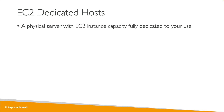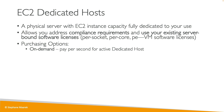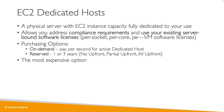Next, we have dedicated hosts. You get an actual physical server with EC2 instance capacity fully dedicated to your use case. You'd want dedicated hosts when you have compliance requirements or need to use existing server-bound software licenses billed on a per-socket, per-core, or per-VM basis. For dedicated hosts, you pay on-demand per second, or you can reserve them for one or three years. They're the most expensive AWS option because you're reserving a physical server.